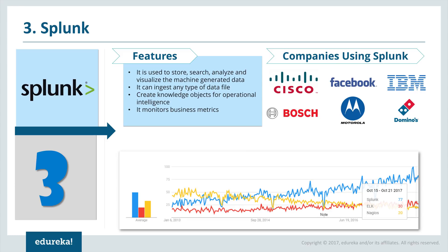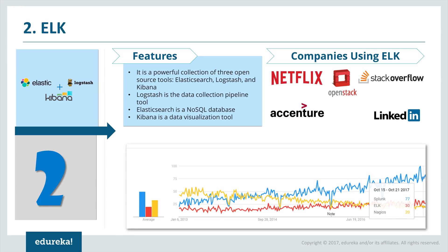ELK is a powerful collection of three open source tools: Elasticsearch, Logstash, and Kibana. Logstash is a data collection pipeline and the first component of the ELK stack, which collects data input and feeds it to Elasticsearch. Elasticsearch is a NoSQL database based on the Lucene search engine, built with a RESTful API as a highly flexible and distributed search and analytics engine. Kibana is used for data visualization. Companies using ELK include Netflix, OpenStack, Stack Overflow, Accenture, and LinkedIn.